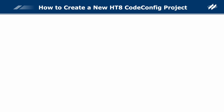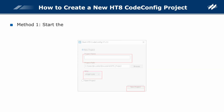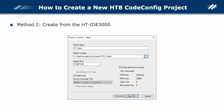How to create a new HT8 CodeConfig project. Method 1: Start the HT8 CodeConfig directly, click New Project, enter the project name, select an MCU, and click the New Project button. Method 2: Create a new project from the HT-IDE 3000 — select an MCU when creating a new project. If the selected MCU supports the HT8 CodeConfig, check the CodeConfig option and click Next to start the HT8 CodeConfig.